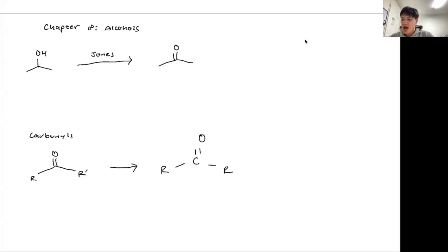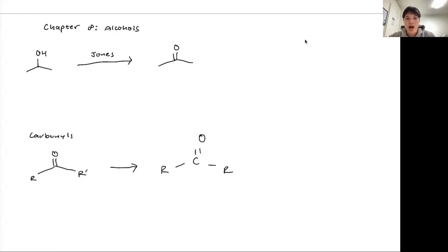Hello. Final chapter, final video of chapter 8. This is going to be about alcohols again, but this time we're actually going to be focusing on a derivative of alcohol. A derivative just means a molecule that can be synthesized using an alcohol. In the last video, you learned that alcohols can be oxidized into ketones, aldehydes, and carboxylic acids. Now in this chapter, we're going to be talking about ketones, aldehydes, and carboxylic acids - mainly ketones and aldehydes. Carboxylic acids will be later in 40C. So this is going to be about carbonyls.